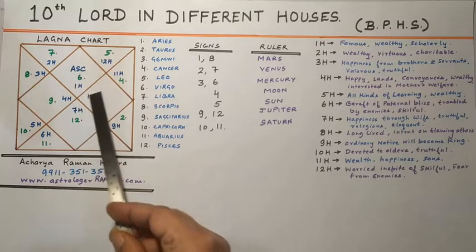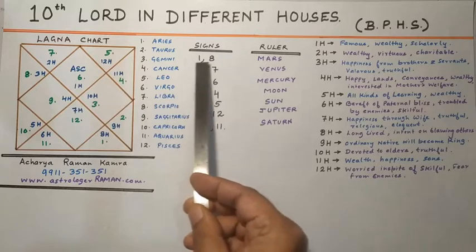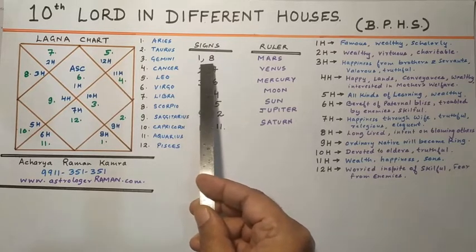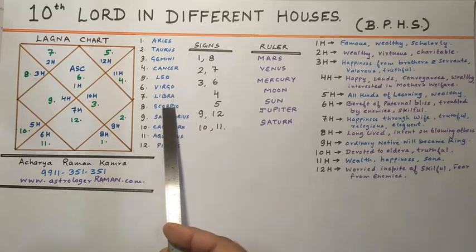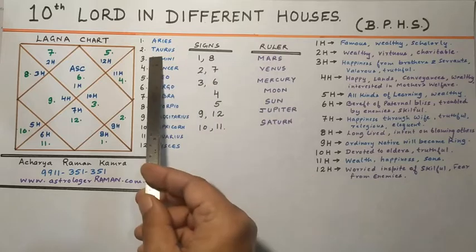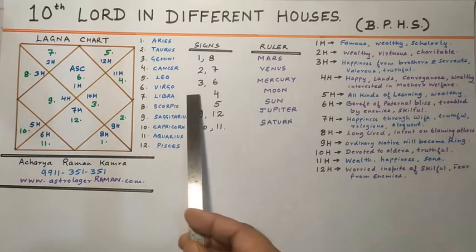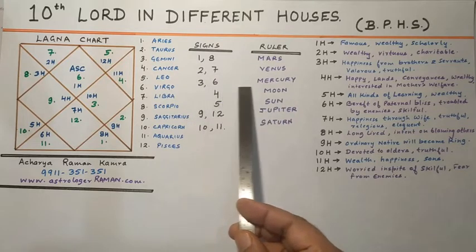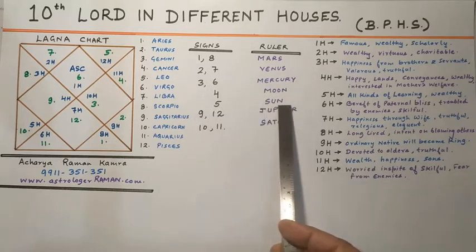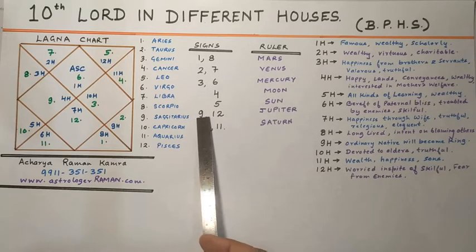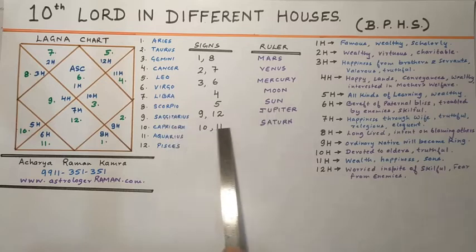Now the Lord of signs: the Lord of the 1st and 8th sign — Aries and Scorpio — is Mars. The Lord of Taurus and Libra, the 2nd and 7th number sign, is Venus. The Lord of Gemini and Virgo is Mercury. The Lord of Cancer is Moon. The Lord of Leo is Sun. The Lord of Sagittarius and Pisces is Jupiter.